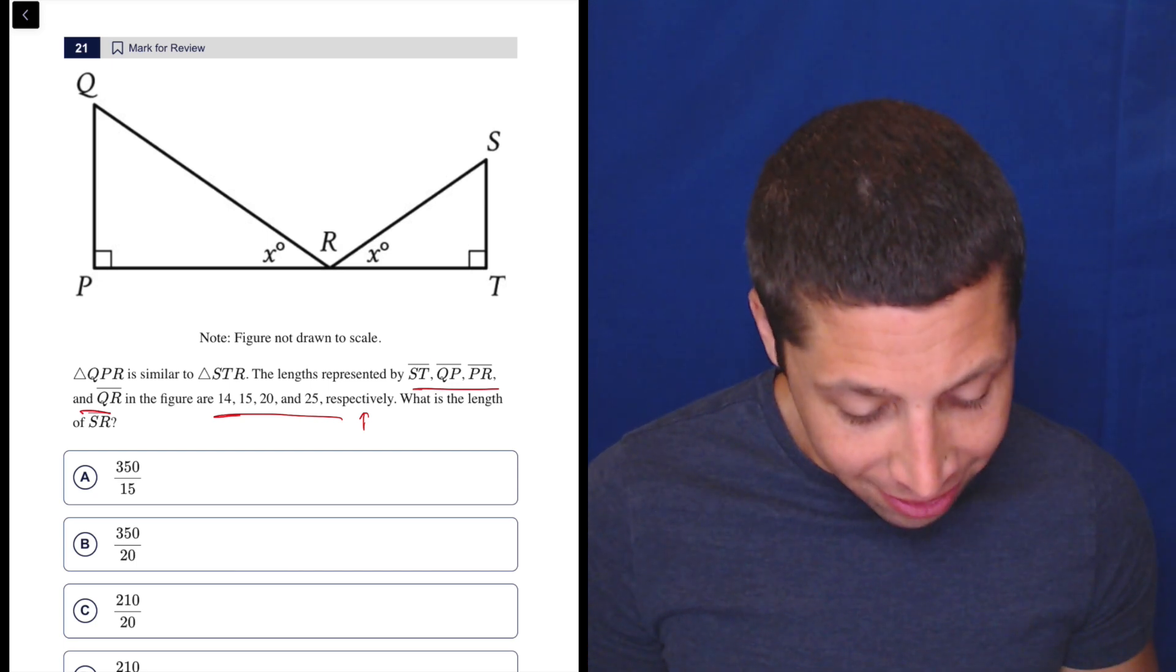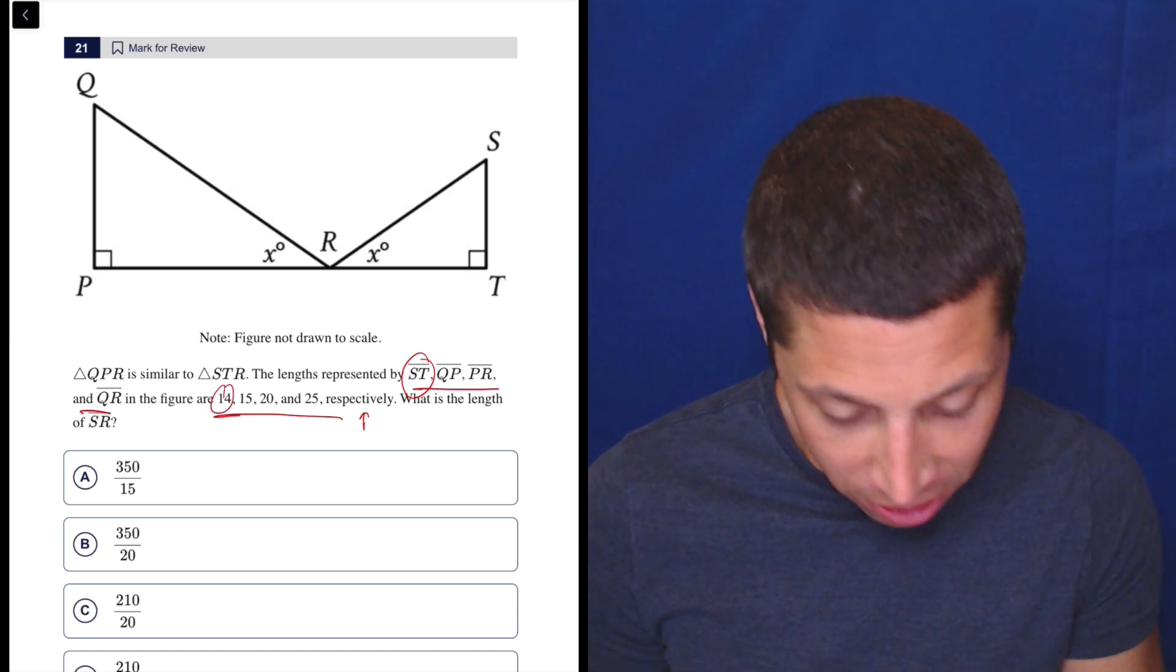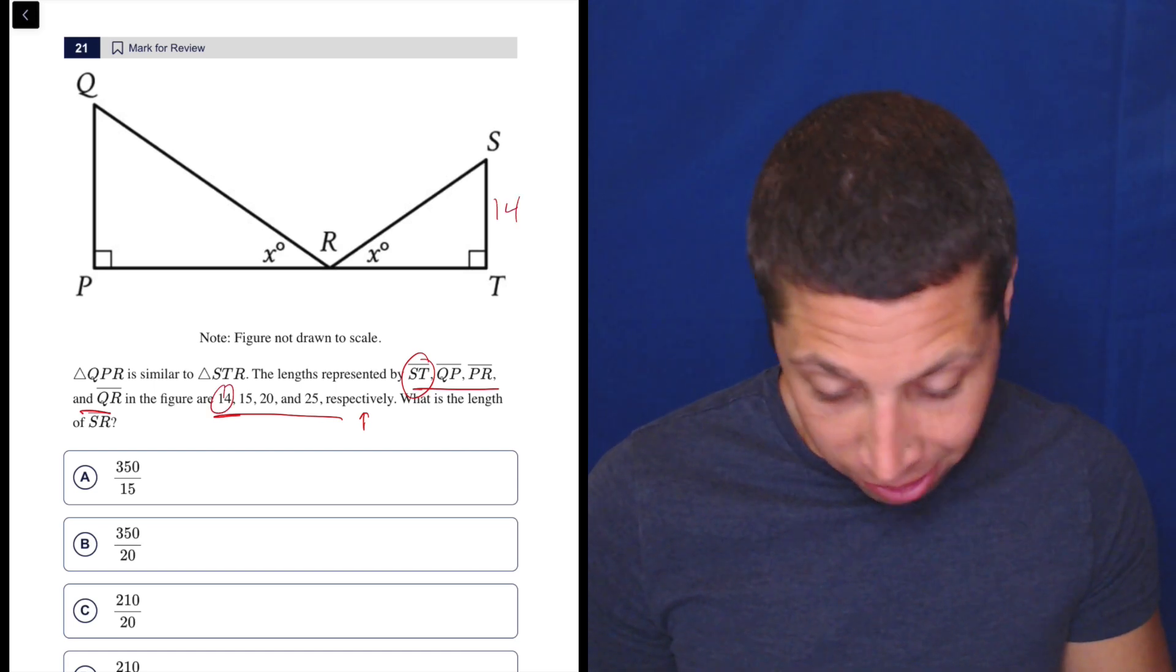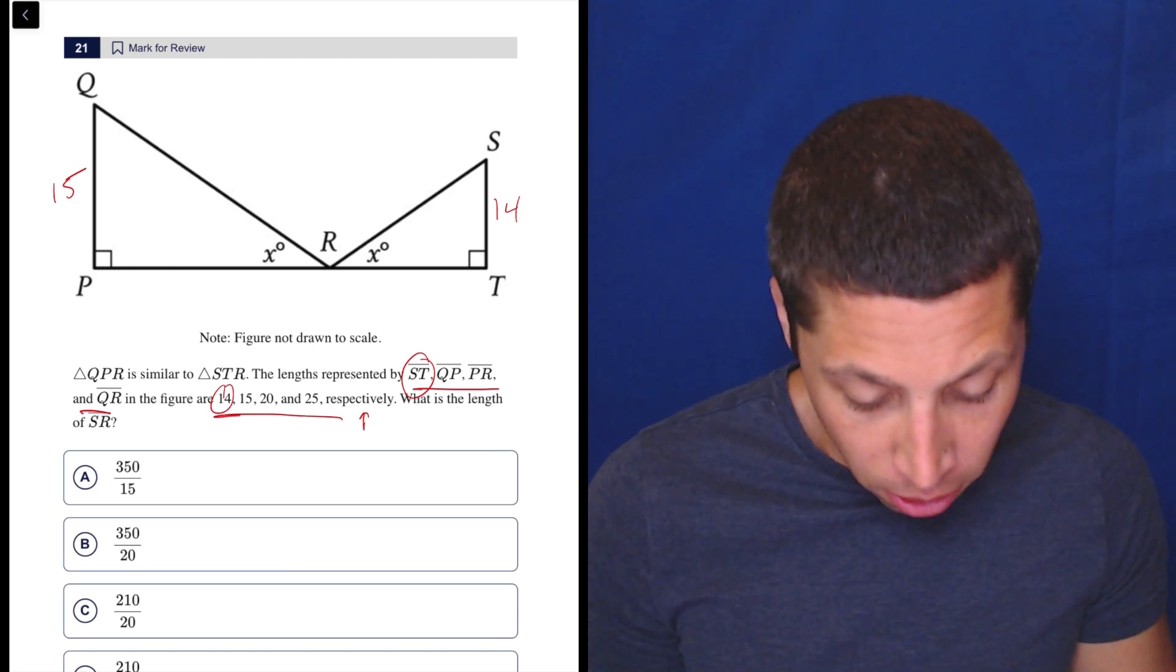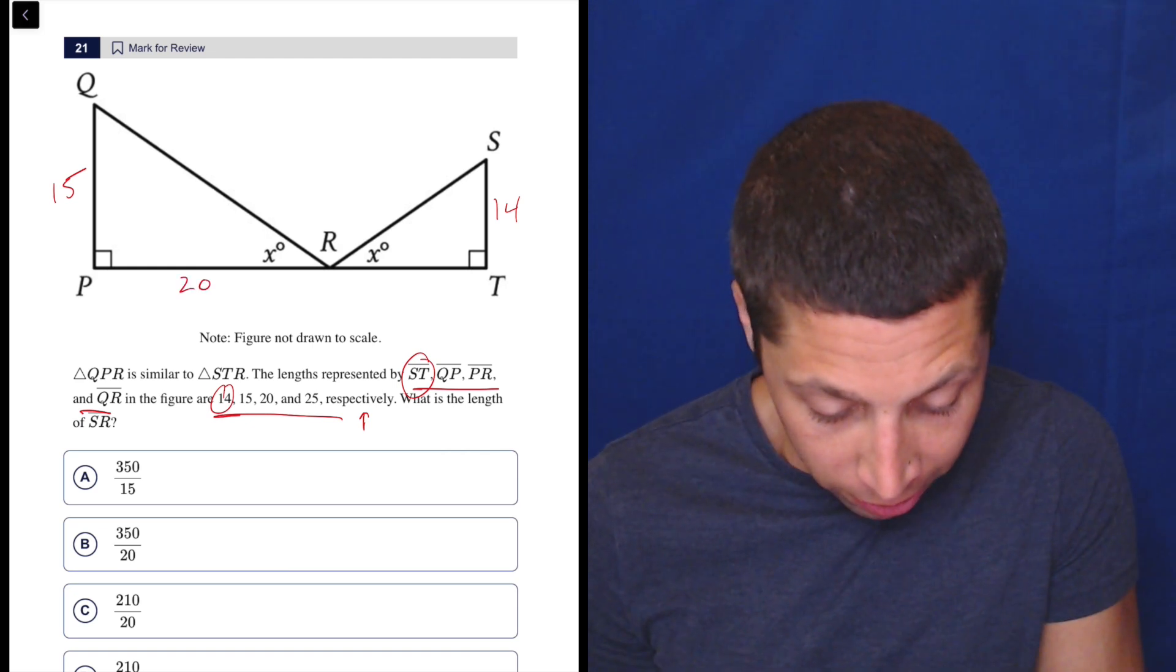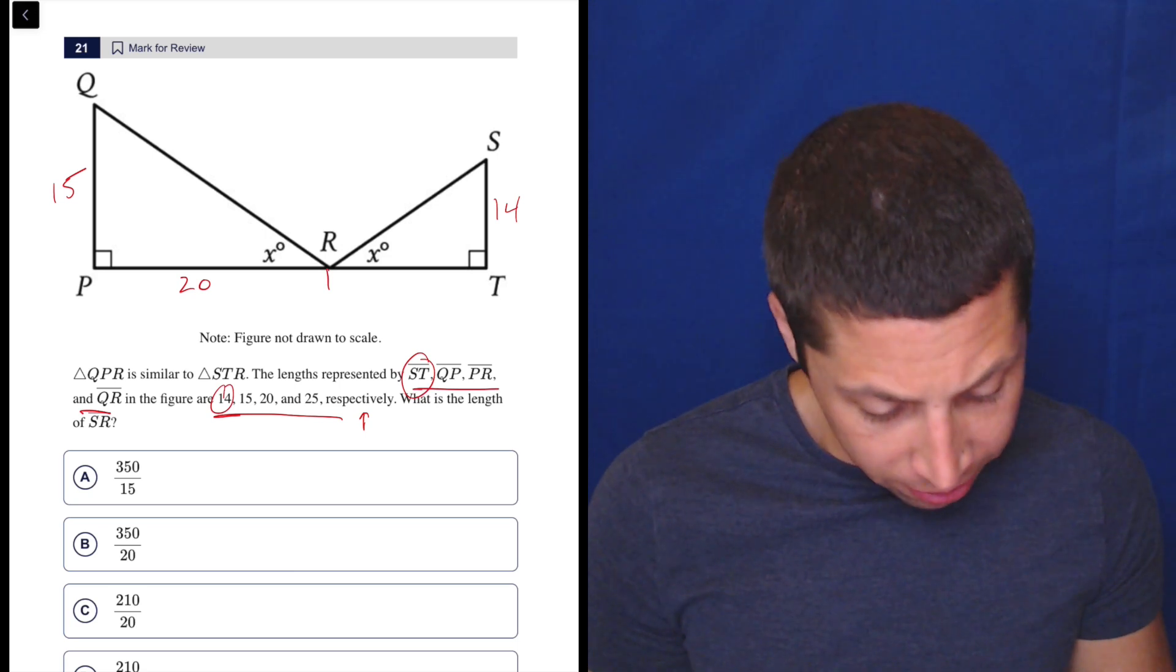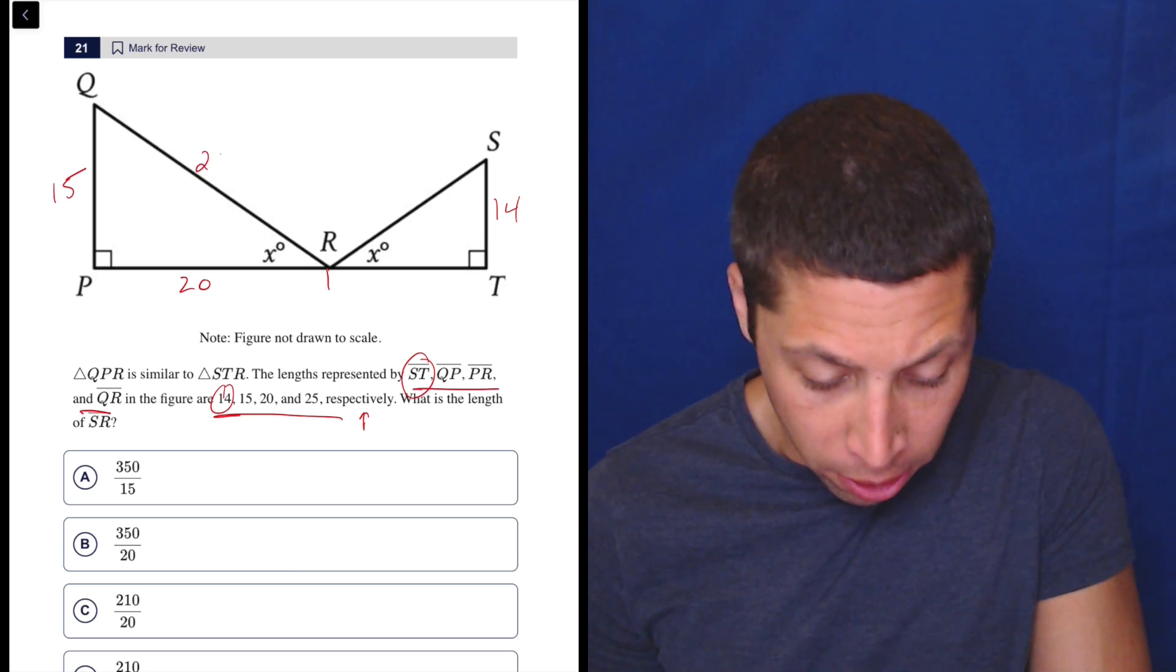So ST is 14. QP is 15. So QP is over here, that's 15. PR is 20, so PR is 20, that goes to here. And then QR is 25. So QR, 25.